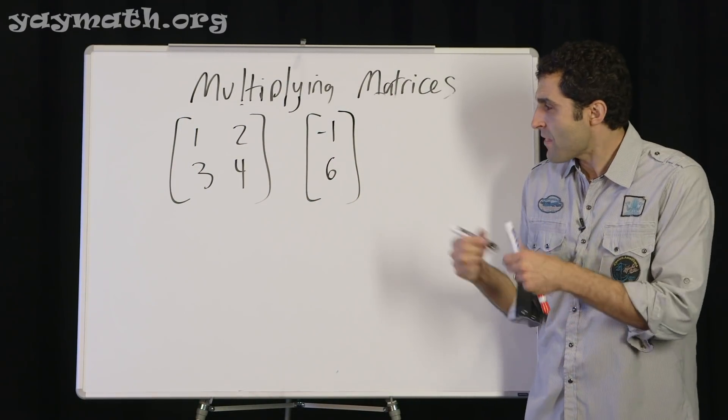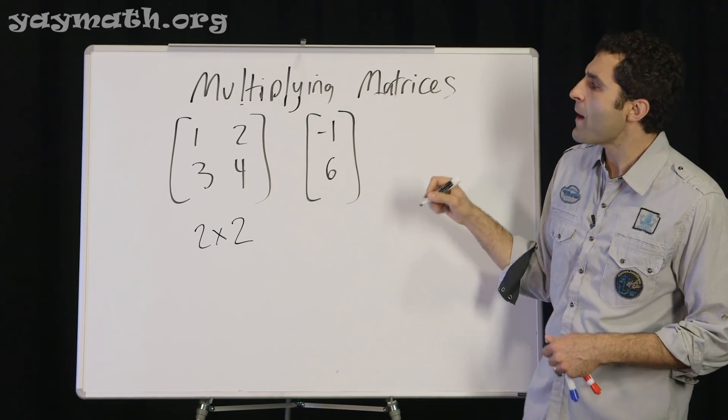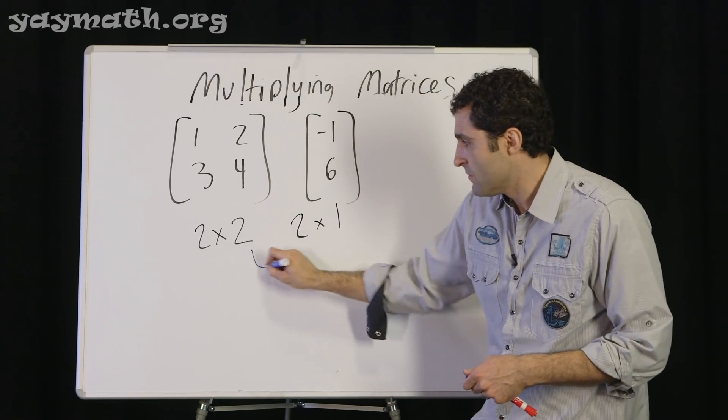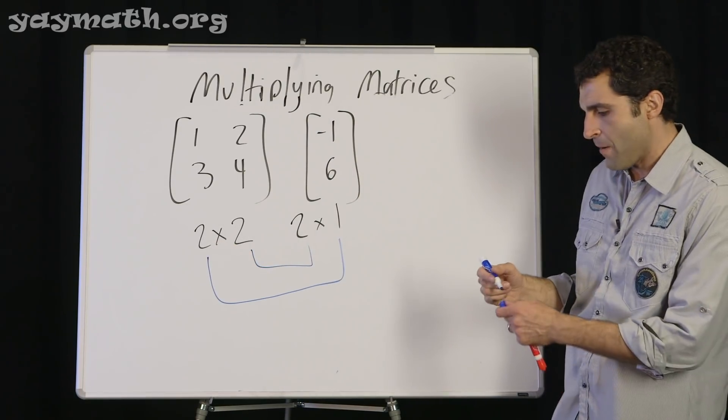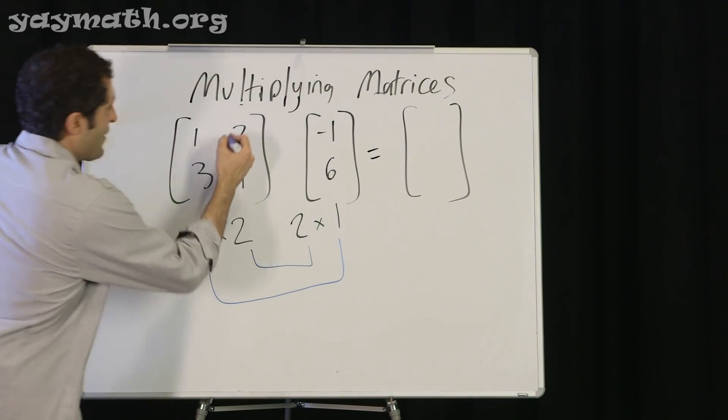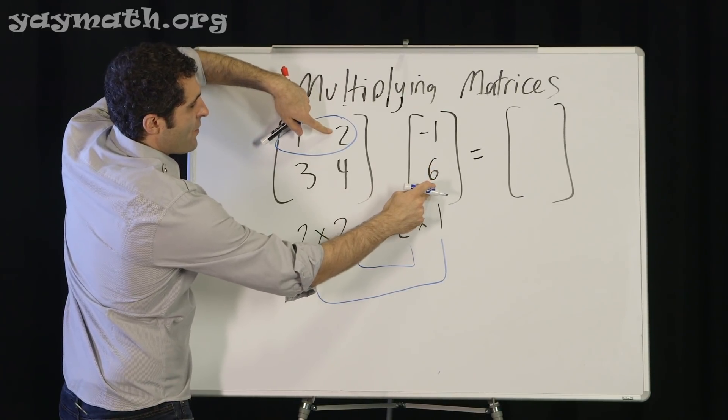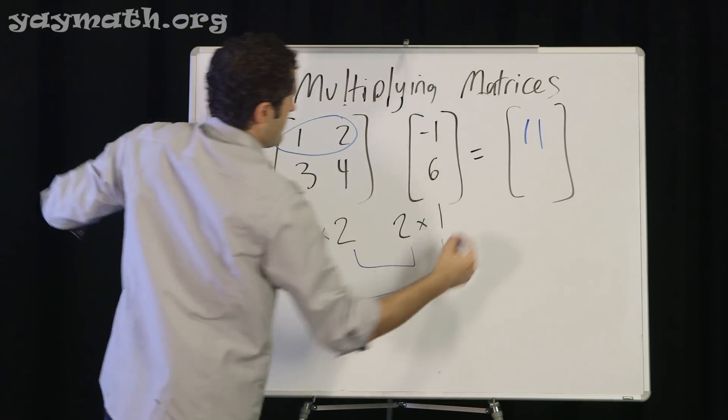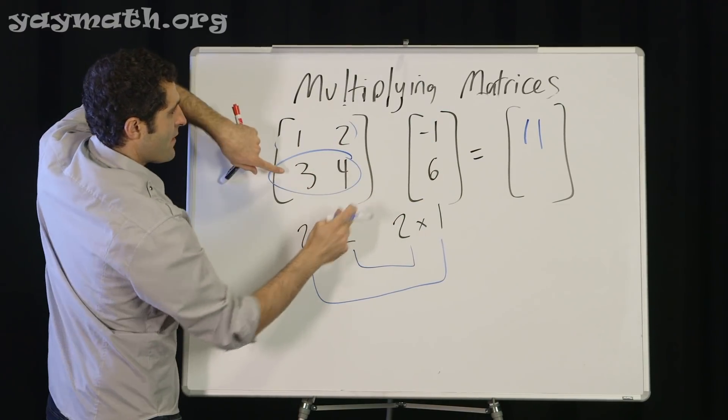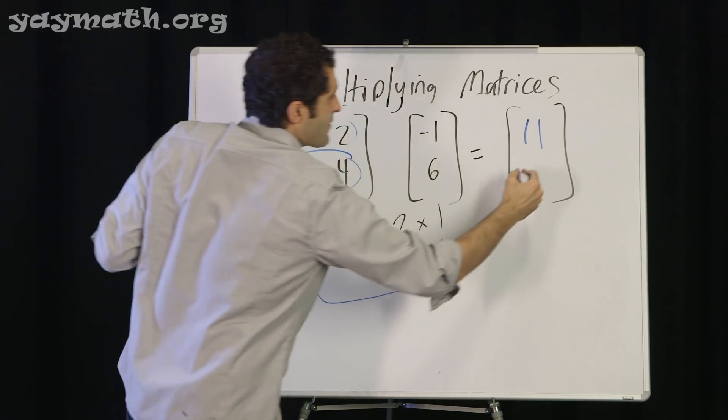This one actually comes up a lot. This is a two by two. And now what is this? Rows by columns. Two rows, one column. Can it be multiplied? Very good. And then the resulting matrix is a two by one as well. Rows by columns. That would be negative one plus twelve is eleven. And now do we have any more columns to exhaust? No. So we move down. Negative three plus twenty-four is twenty-one.